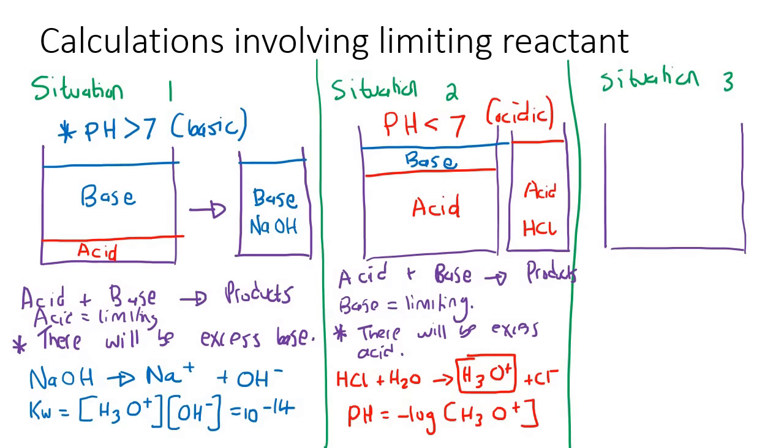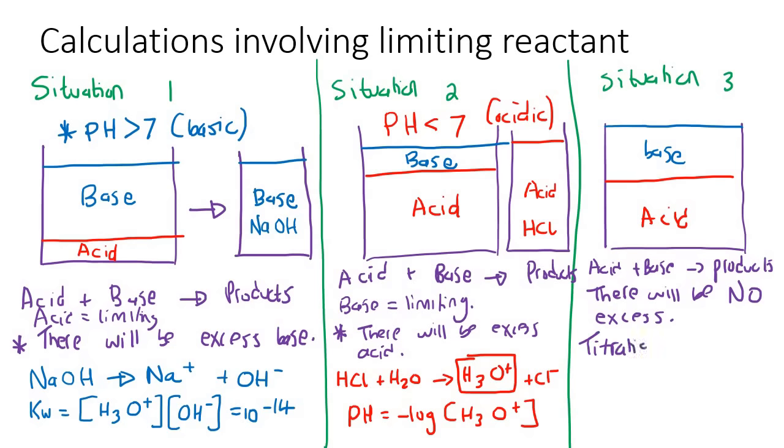And then lastly the easiest one, situation three. We will add perfect amounts. So we will add just the right amount of acid, just the right amount of base, pretend that those are exactly the same. And then we can say that you'll have acid plus base giving you products. But now there will be no limiting reactant or there will be no excess.